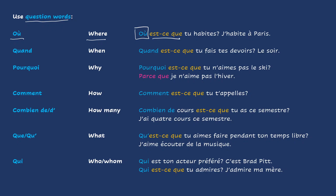Où est-ce que tu habites? Where do you live? J'habite à Paris. So this is the information that we want. We are using où, and then où is followed by est-ce que, and then the rest of your sentence, which is the subject and the verb. Où est-ce que tu habites? Where do you live? J'habite à Paris. I live in Paris.